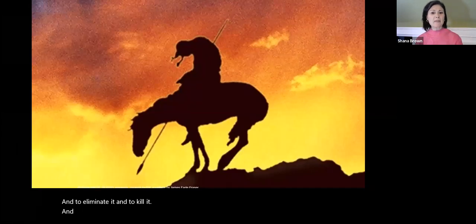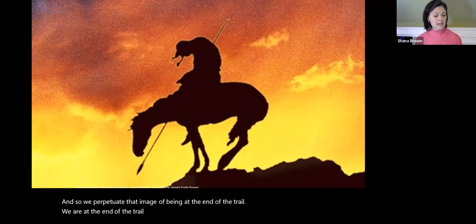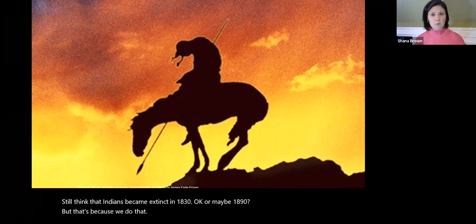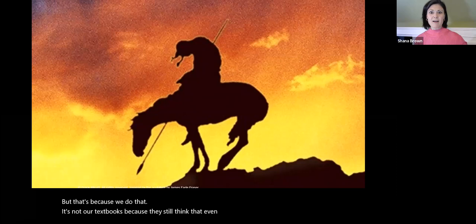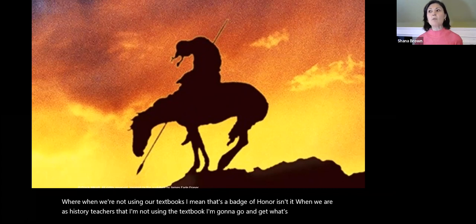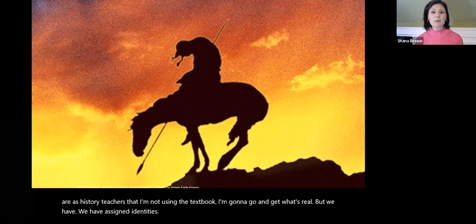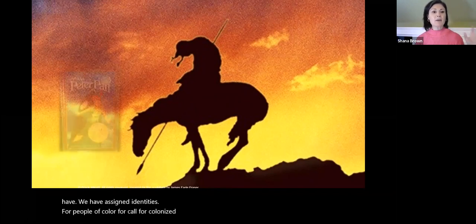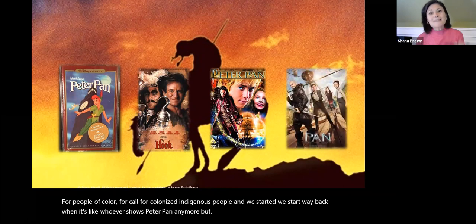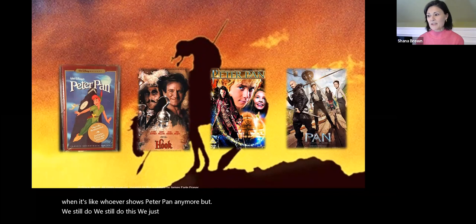We perpetuate that image of being at the end of the trail. Our students still think that Indians became extinct in 1830 — or maybe 1890. That's because we do that. It's not just the textbooks, because students still think that even when we're not using textbooks. We have assigned identities for people of color, for colonized indigenous people. We start way back — think about Peter Pan. We still do this; we just repackage it.